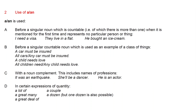A or AN are used before a singular noun that is countable when it is mentioned for the first time and represents no particular person or thing. For example: I need a visa; they live in a flat. These objects are all discrete, meaning they can be counted, and they are all singular.